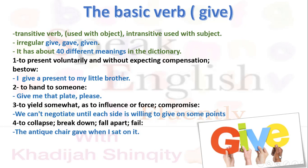Number three — here the verb is intransitive, it doesn't need an object; the meaning is complete without one. To yield somewhat — to concede on certain things — as to influence or force a compromise, so that a person can negotiate or make concessions for a certain cause. For example: We can't negotiate until each side is willing to give on some points.